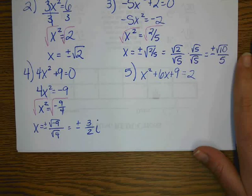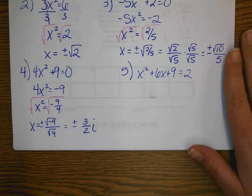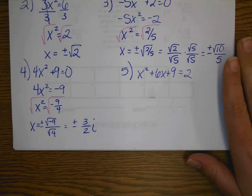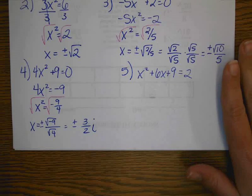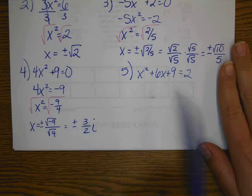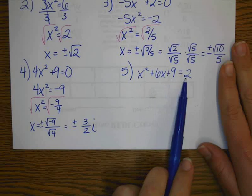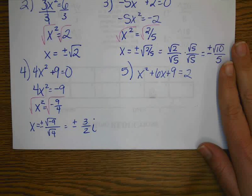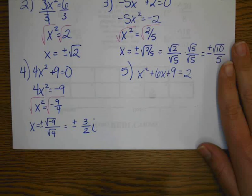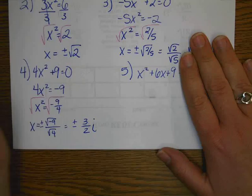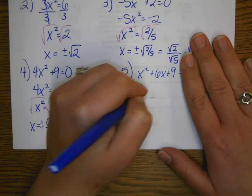Here, we have x squared plus 6x plus 9 equals 2. Now, most of you would think we need to move this over, and in later sections we'll talk about using the quadratic formula and we set them equal to 0 in order to factor. But here, if you could recognize, that is a perfect square trinomial,